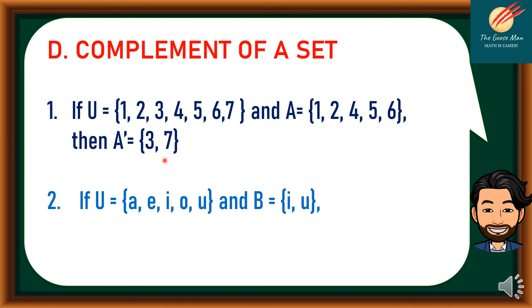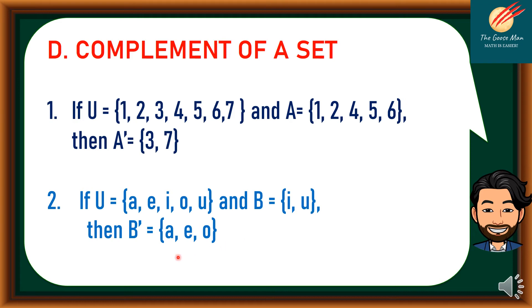Another example: if U is composed of {A, E, I, O, U} and B is equal to {I, U}. So B prime, or the complement of B, is {A, E, O}.